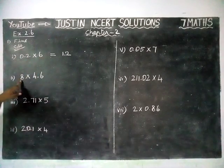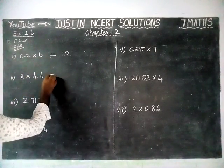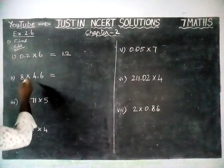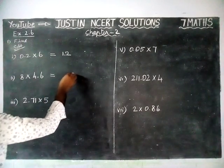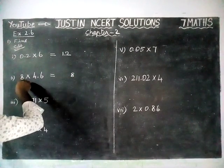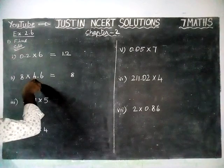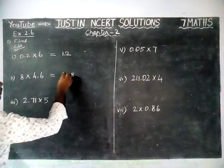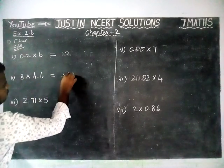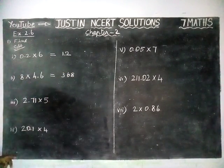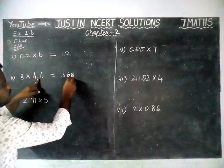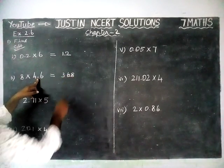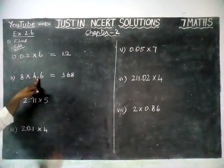And next, 8 into 4.6. The same thing. First, we have to multiply the numbers. 6 eights are 48. Remaining 4, 8 fours are 32. 32 plus 4 is equal to 36. So 368. And here we have one decimal place. So from right hand side, one decimal place is 36.8.